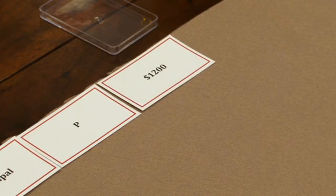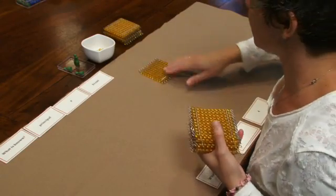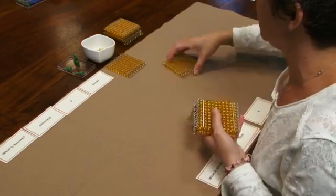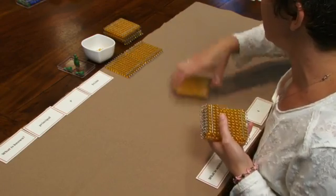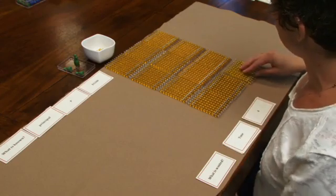And we're going to use the hundred squares to symbolize our $1,200 principal. We have 100, 200, 300, 1100, 1200.